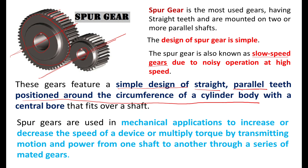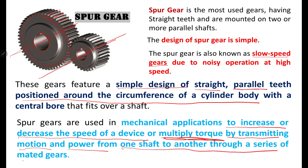Spur gears are used in mechanical applications to increase or decrease the speed of a device, or multiply torque by transmitting motion and power from one shaft to another through a series of mated gears. This is a fundamental application of spur gears.